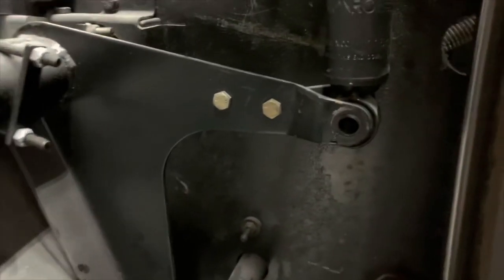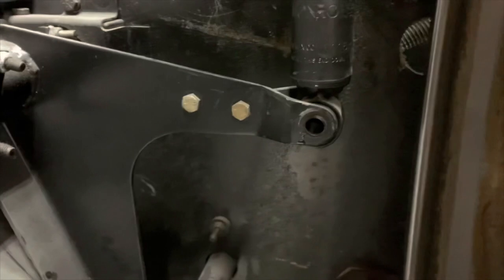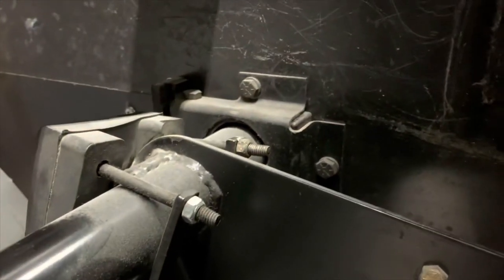All right, now that I got my shoulder bolt out, the next step is going to be removing the cushion block. You got three three-eighths bolts here.